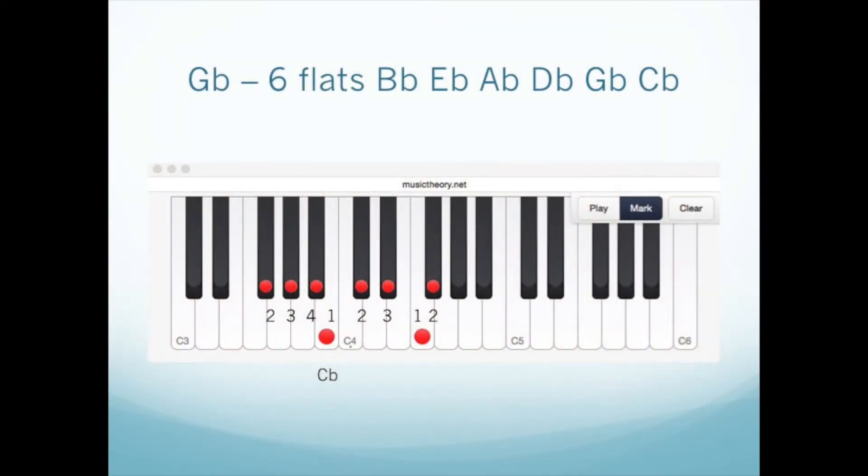The Gb major scale adds the Cb as a scale tone, which is a B natural on the piano. Start with finger 2 on the Gb. The thumb lands on the notes F and Cb, which is B.